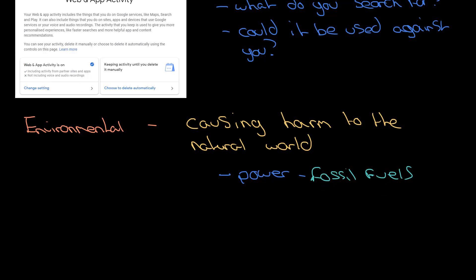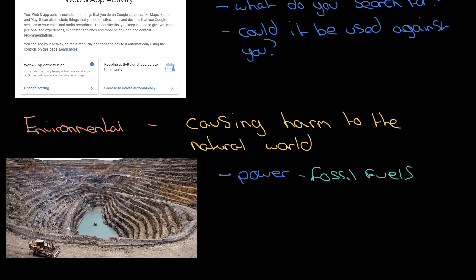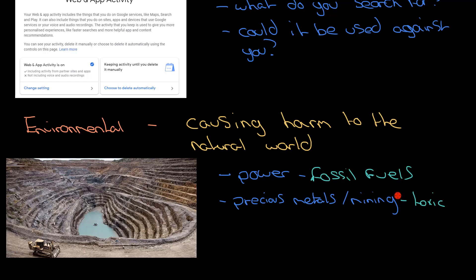There are also a lot of precious and rare metals in computers and smartphones. What you're looking at on the left-hand side is a mine — this is where one of these precious metals comes from. You can see the massive scar on the environment. It causes toxic gases and liquids to be released, which can flow downstream and poison rivers in the countries where these metals are mined.